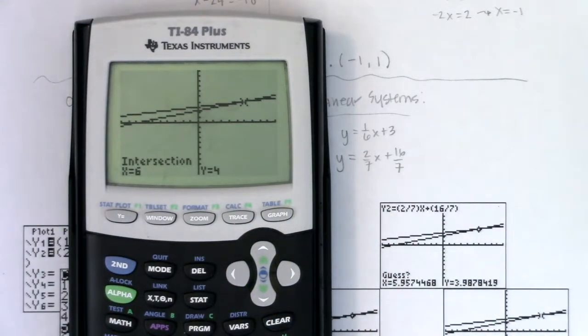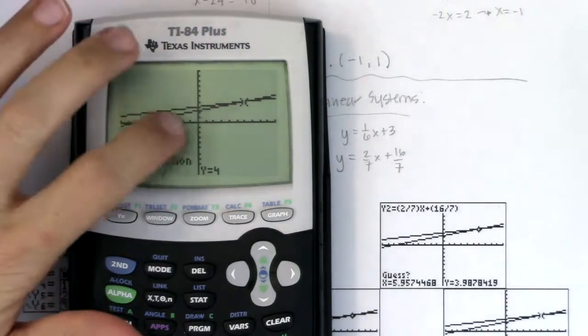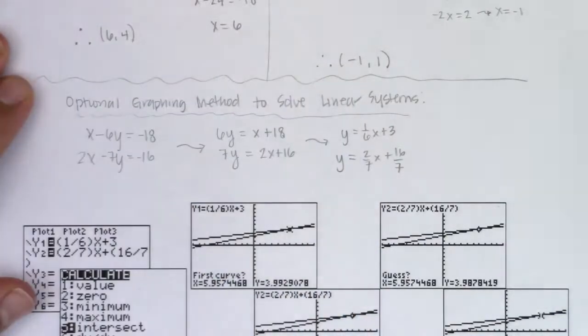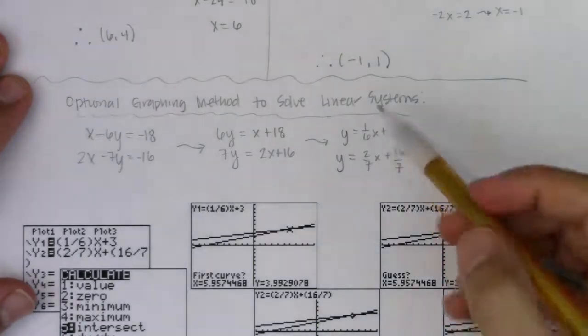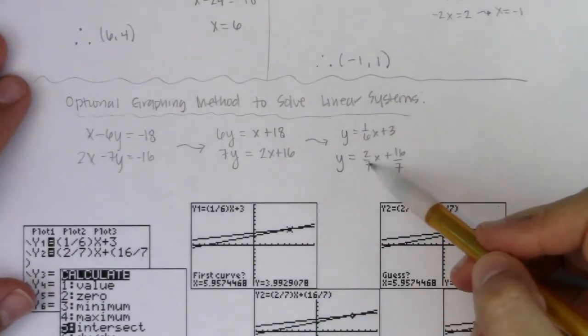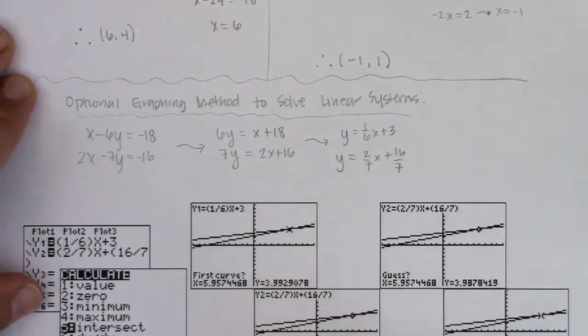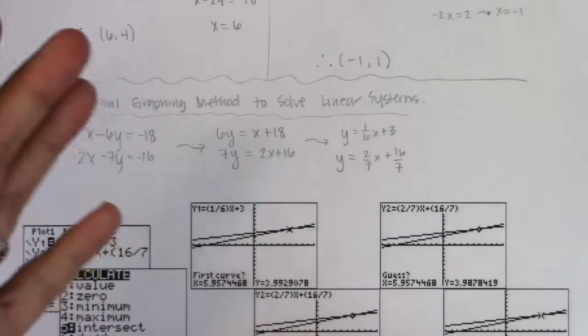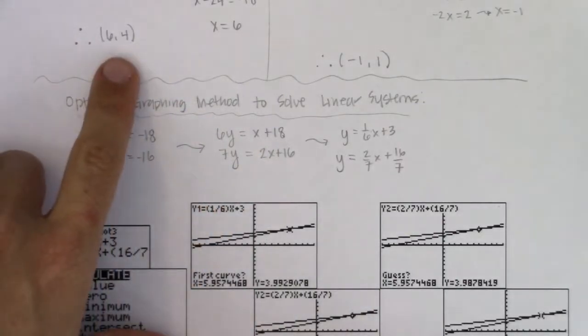so you do have the option of checking things on your calculator under the graphing calculator screen. But in order to do that, you have to solve both equations in your system and put them in slope intercept form. Okay, now, for both examples one and two, since they were the same, in each a and b, we got exactly one solution each time out.